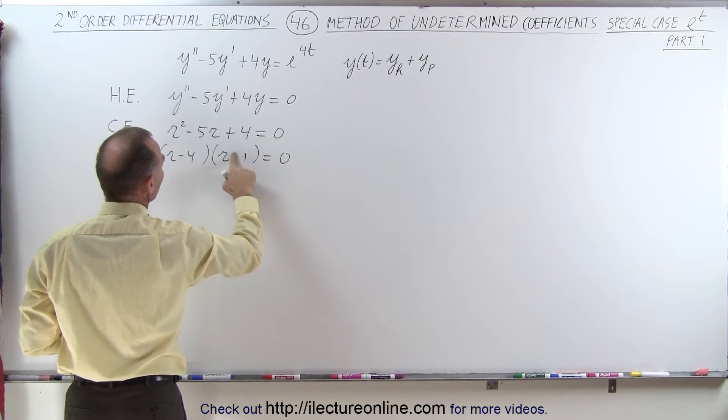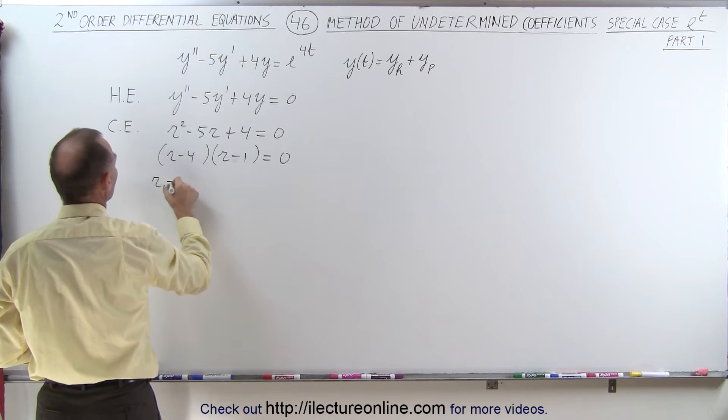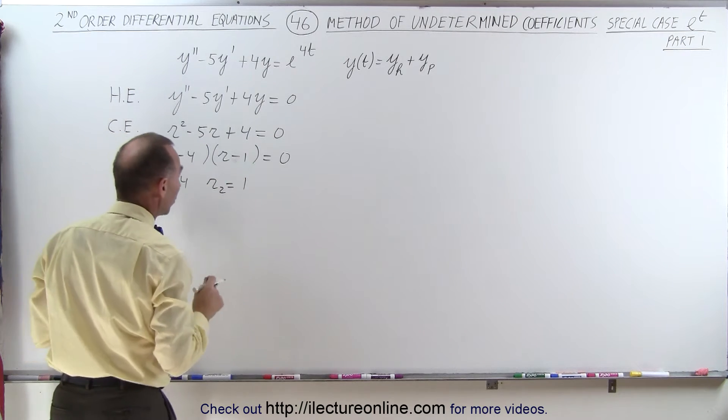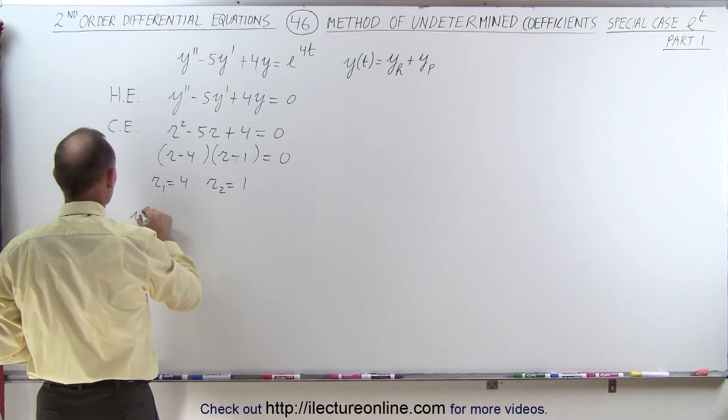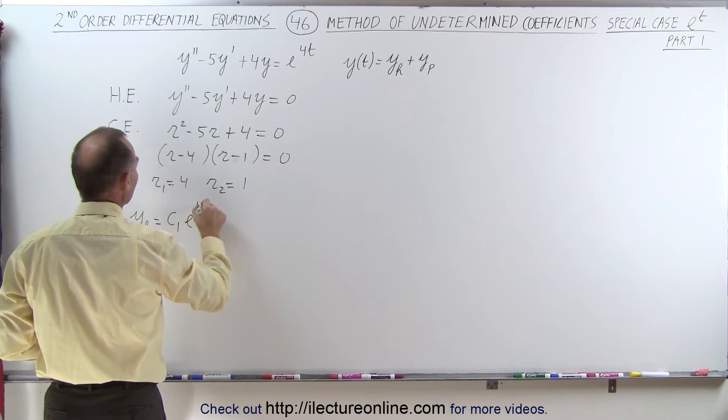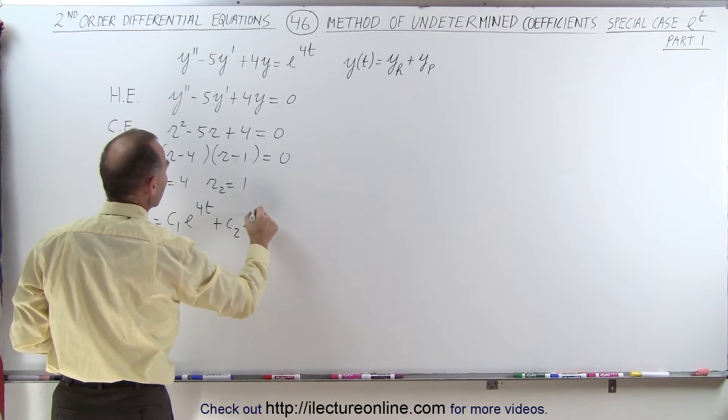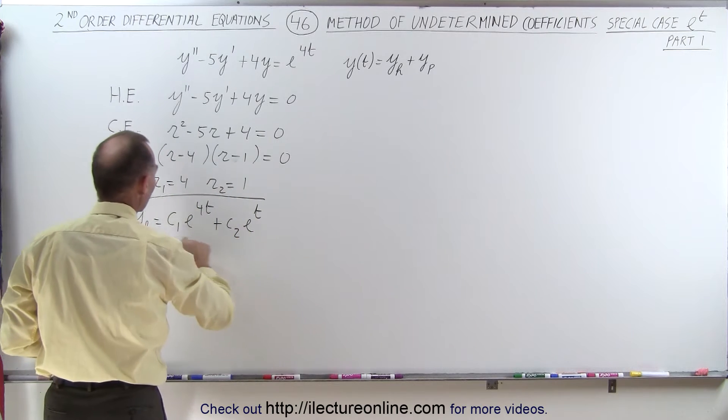So this becomes r minus 4 and r minus 1. And then the two roots, r1 is equal to 4 and r2 is equal to 1, which means that the homogeneous part of the solution will look as follows: y sub h is equal to c1 e to the 4t plus c2 e to the t.